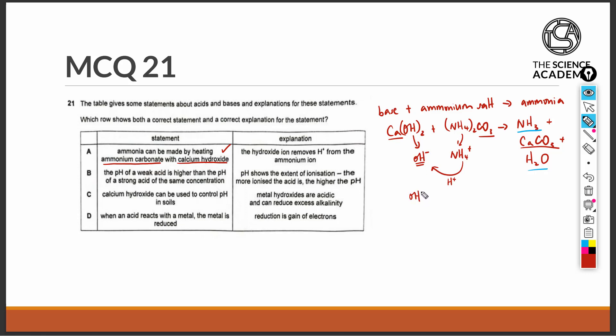We can see that the hydroxide ions indeed take away one H+ ion from ammonium to give us water and ammonia gas. Essentially, ammonium has lost one H+ ion in order for it to become ammonia gas. And as a result of accepting one H+ ion, the hydroxide ion becomes water. So it is true to say that the hydroxide ion, which is from the calcium hydroxide, removes the H+ ion from the ammonium ion.